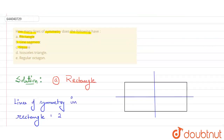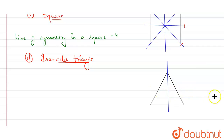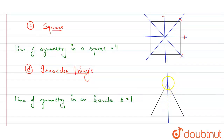Now Part D is an isosceles triangle. Let me draw an isosceles triangle. If I draw a line from the apex down the middle, both sides are identical and symmetric. However, if I draw any other line — horizontal or in any other direction — it will not be symmetrical. So lines of symmetry in an isosceles triangle equals one.